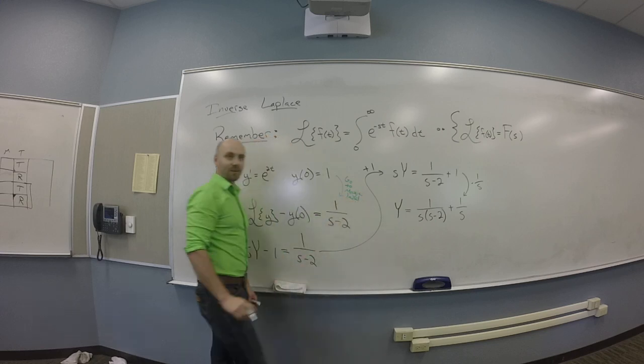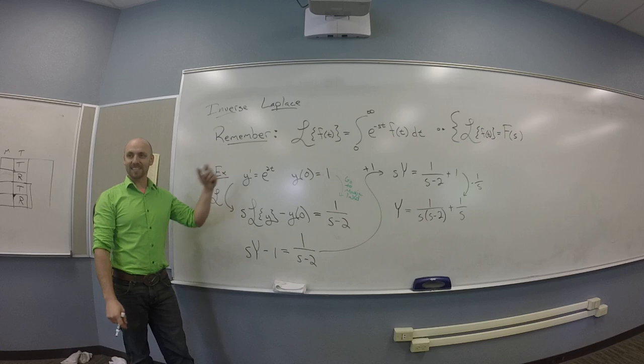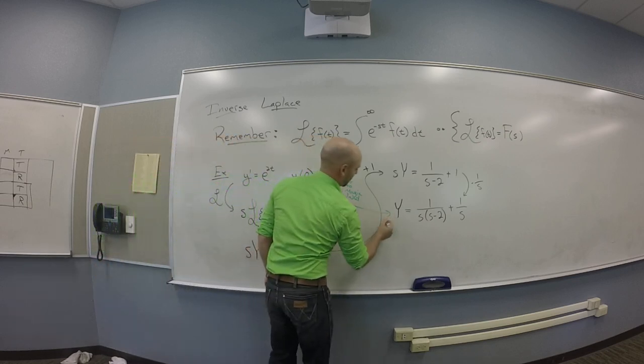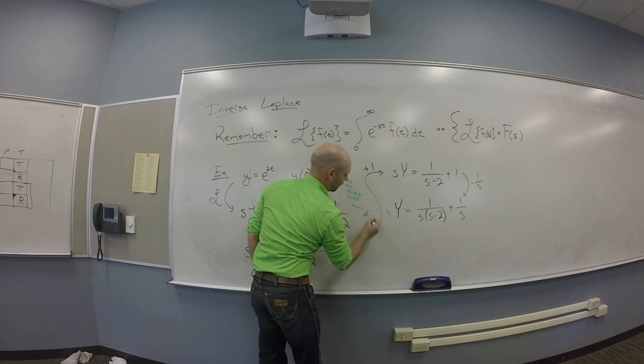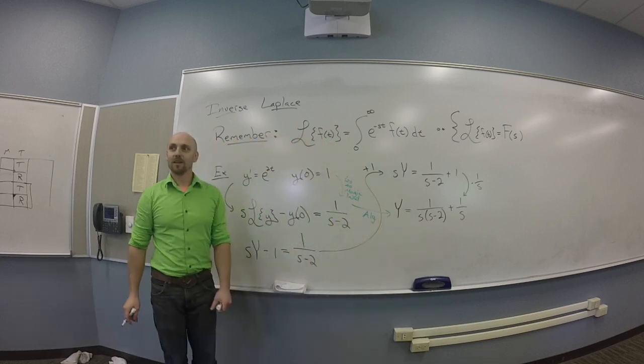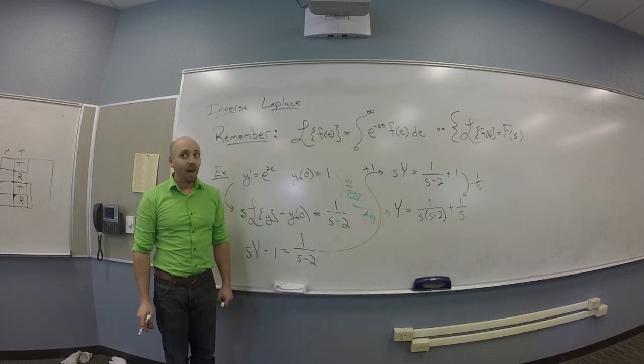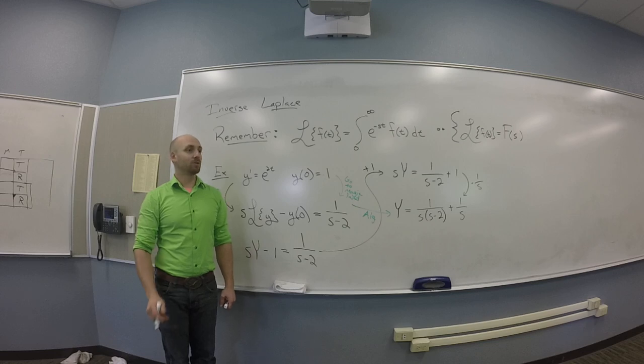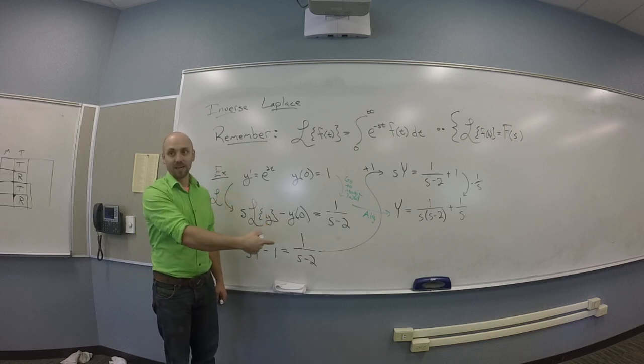So this was the idea of the steps here. This step is like go to magic land. Take your little journey to magic land. Now you're in s's. Then you do some algebra, which gets you to here. But you're trapped in magic land. And so what you would like to do is you would like to back out of magic land.